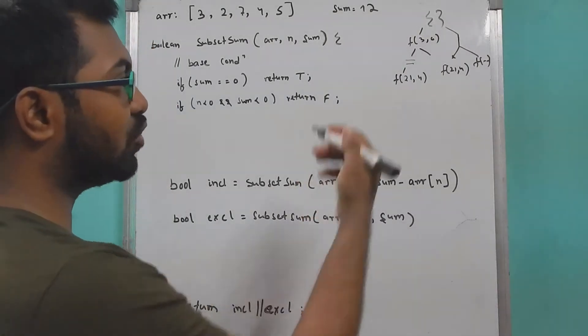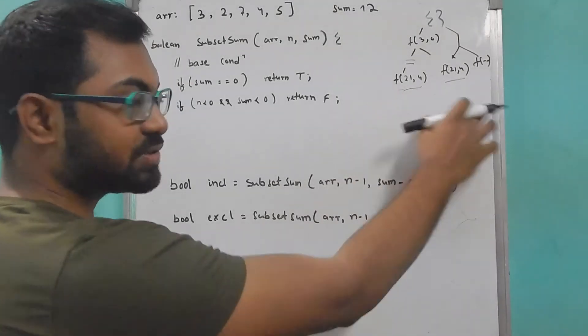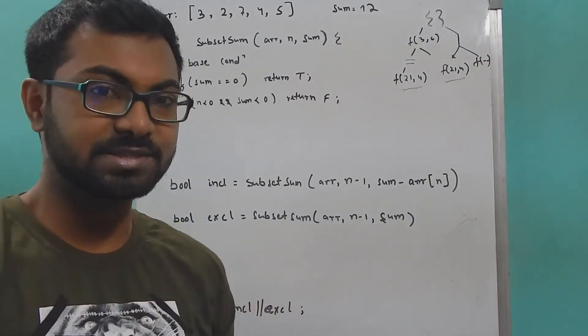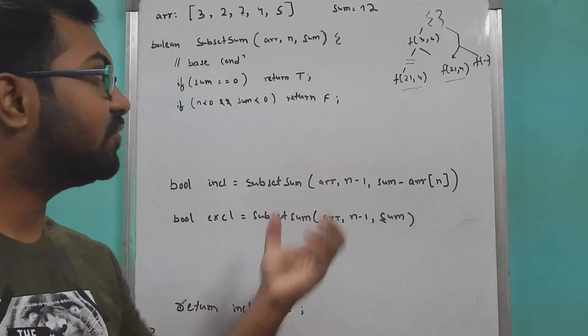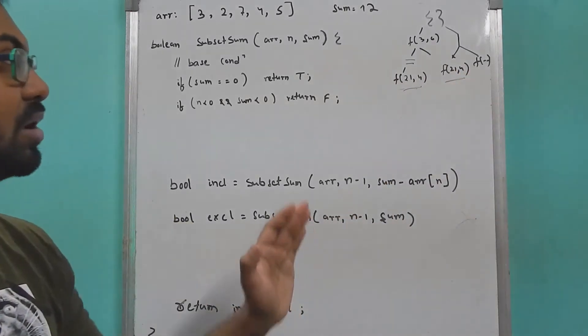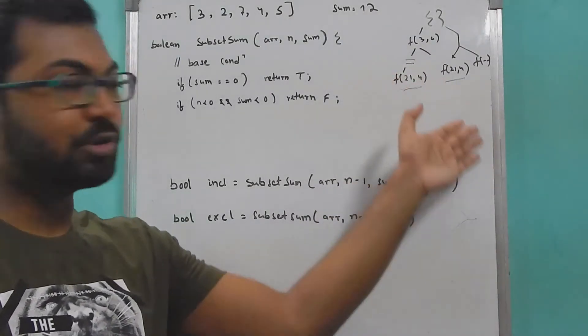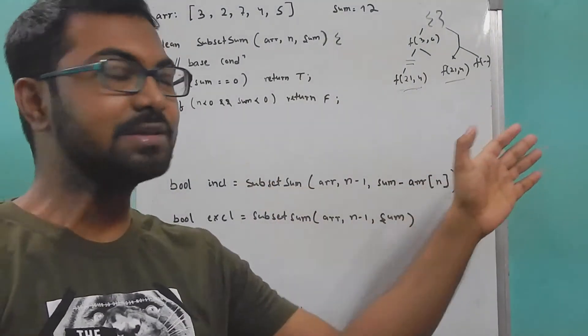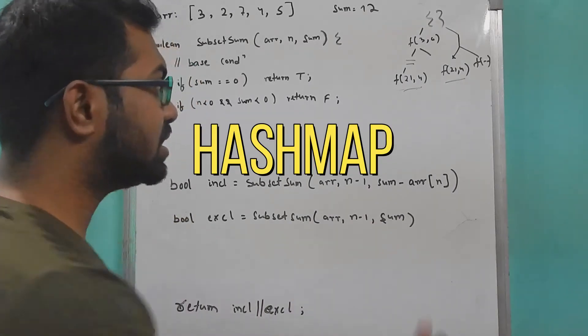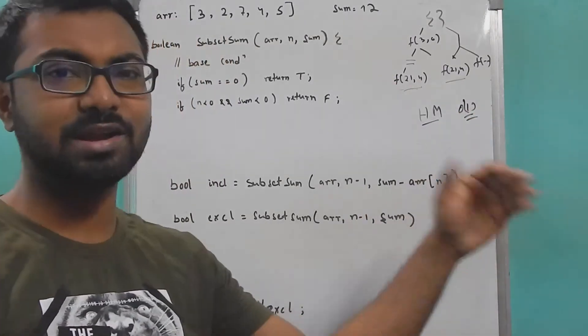Since we saw the overlappings in this case - 214 in the previous slide - somehow we need to store these values in a data structure. Let's think for a while which data structure to pick. We need something to have a fast lookup because if we're calling for a function of 21 and 4, we should be able to get that value as quick as possible. We saw there are overlappings and we need the fastest lookup. Obviously the answer is hash maps, which will provide us with O(1) lookup.